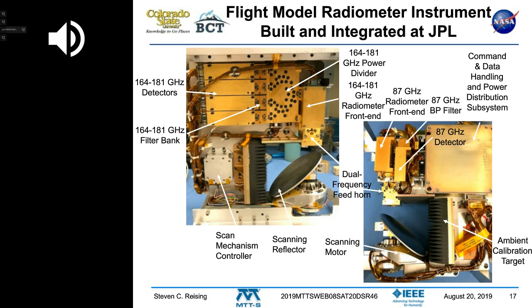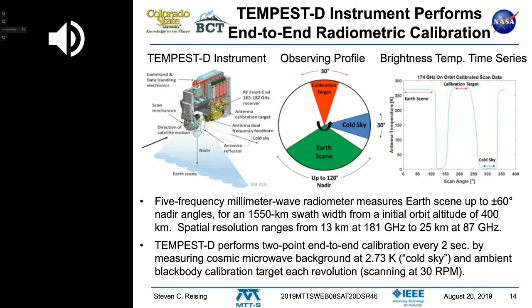Next question: What is the spatial resolution of the measurements? The spatial resolution varies from 13 kilometers at our highest frequency to 25 kilometers at our lowest frequency. This is very comparable with operational radiometers, which generally have larger antennas but fly higher as well — commensurate with the state of the art for these measurements.